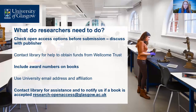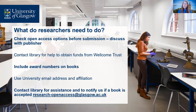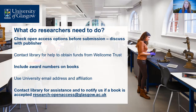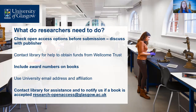So what do authors need to do? Check open access options before submission and, if appropriate, discuss open access options with your publisher. Contact the library if Wellcome-funded and we will help get money from Wellcome and administer the process. Include your award numbers in the acknowledgement of your book. Always use your university email address and affiliation as per the code of good practice in research — this will facilitate access to some of the publisher arrangements. Contact research-openaccess@glasgow.ac.uk if you want help exploring your obligations and options.